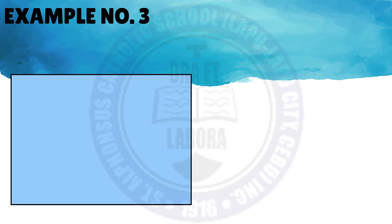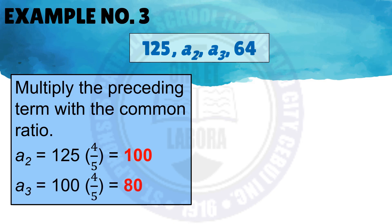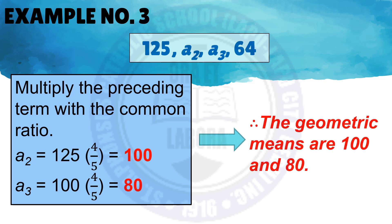To find the geometric means of the third example, multiply each preceding term by the common ratio 4 over 5. For a sub 2: 125 times 4 over 5 equals 100. For a sub 3: 100 times 4 over 5 equals 80. Therefore, the geometric means are 100 and 80.